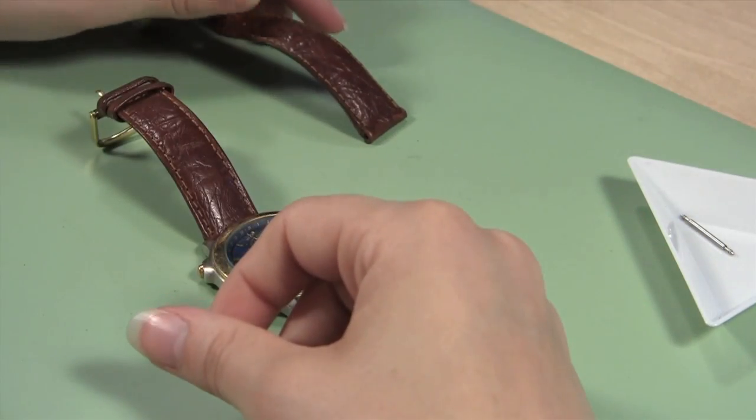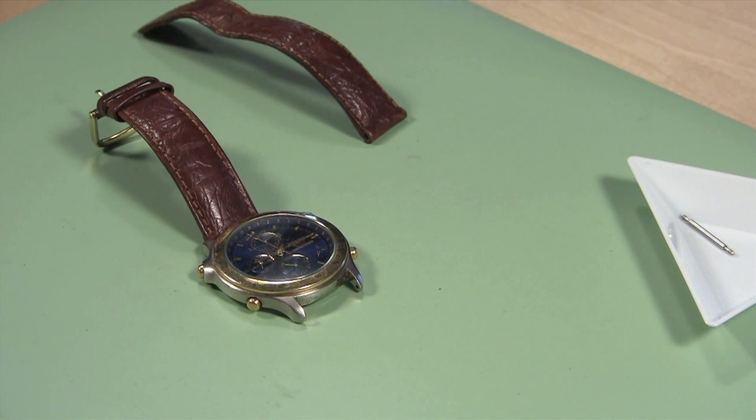Set the first part of the watch band off to the side so you will remember which side of the watch case it came from. By doing this, you will ensure that the clasp of your new watch band will close the same way as the one on your original band.